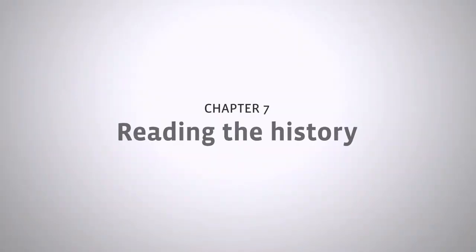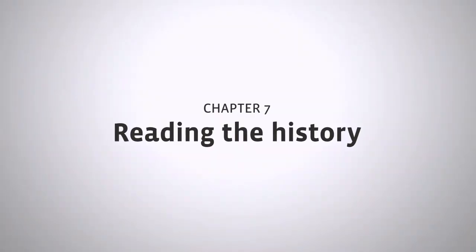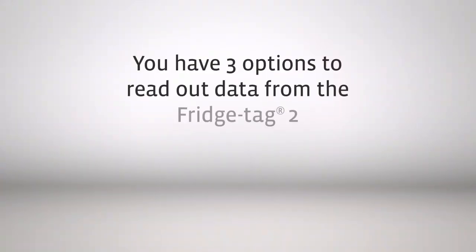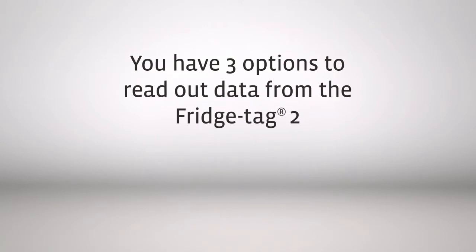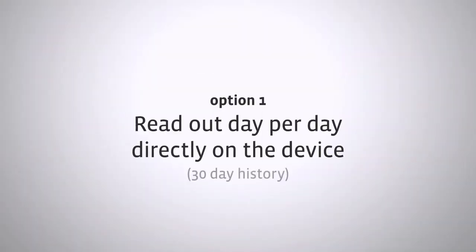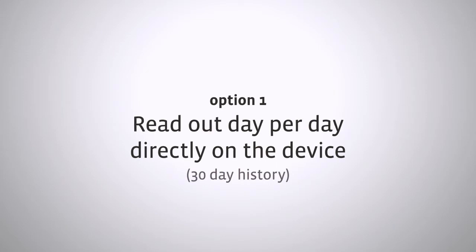Chapter 7: Reading the history. You have three options to read out data from the Fridge Tag 2. First option: read out day per day directly on the device — press the 30-day history.